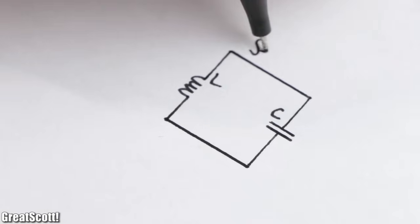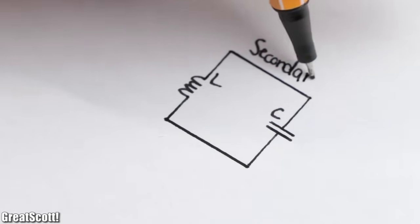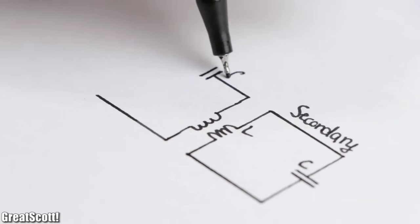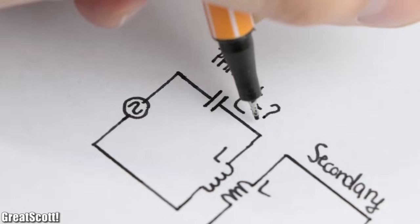That means while up until now only the secondary side of the system consisted of a resonant circuit, this time we add a capacitor to the primary side so that we have a second resonant circuit.